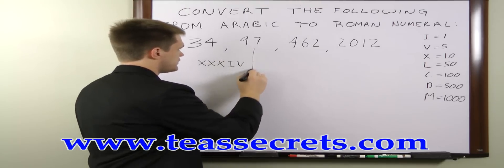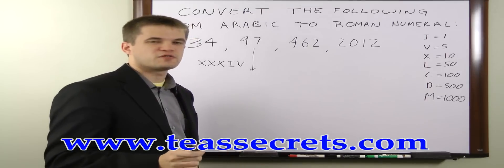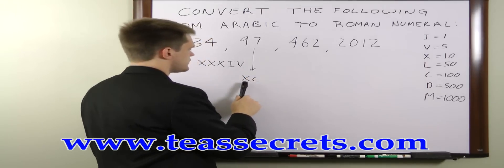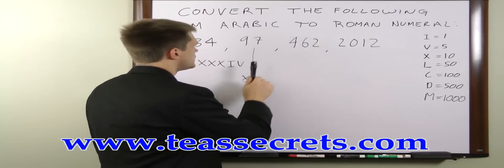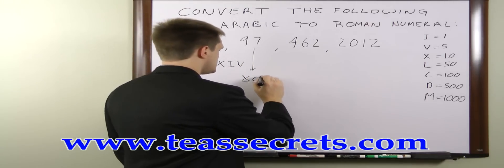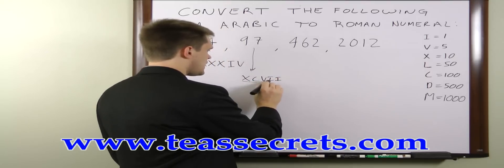For 97, we have a 9 in the tens column, so we're going to subtract 10 from 100. That'll give us XC. So that's our 90. And then we write 7 as VII. So 97 can be written as XCVII.